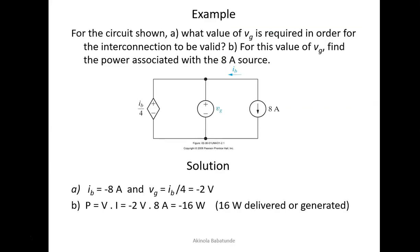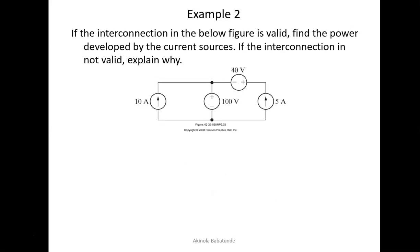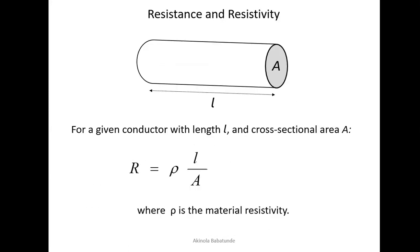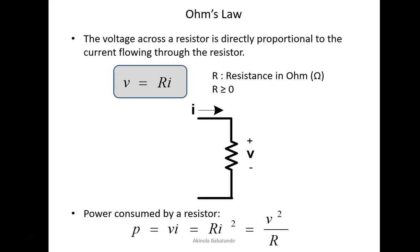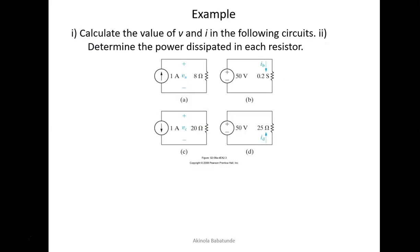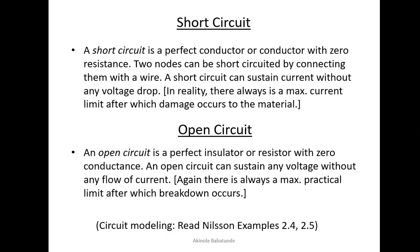We have looked at a couple of examples in the previous lesson. In case you've not seen some of these lessons, please try to check them out. We talked about all of these important details and we will need them in this current lesson. We went through some of these examples. We talked about the resistance and resistivity, Ohm's law, conductance, and then we checked through some examples together in the last lesson. And then we discussed the short circuit and open circuit.